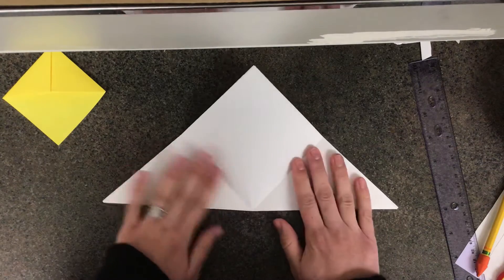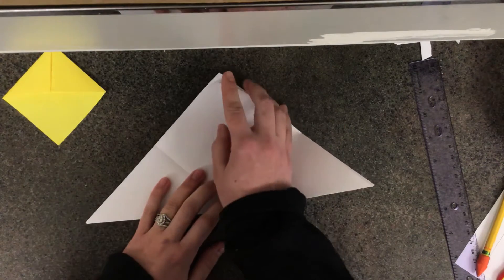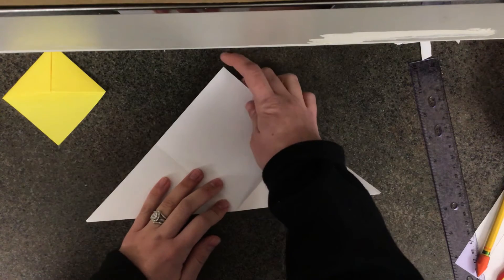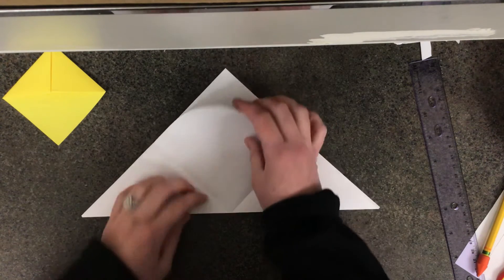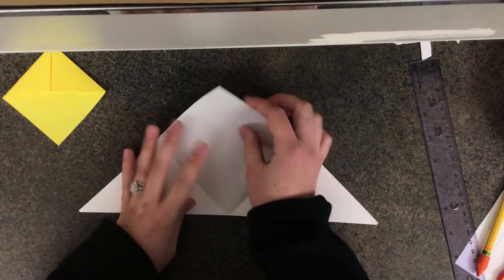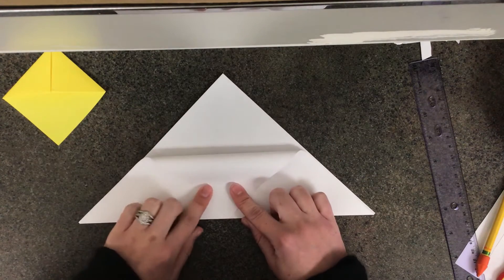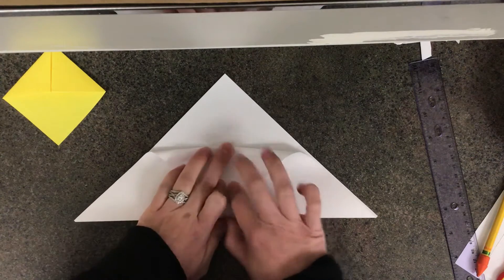We're going to take one flap from the top, so not both of them but just this top one. We're going to fold this top point down to the bottom edge like this. Go ahead and crease it.